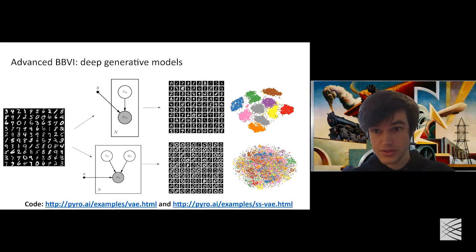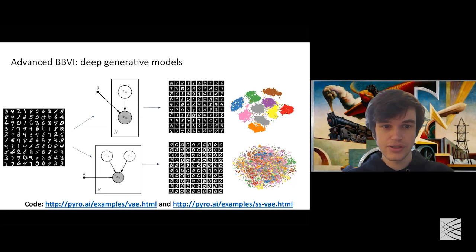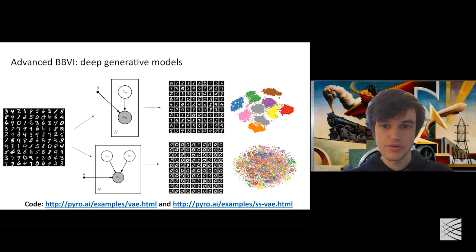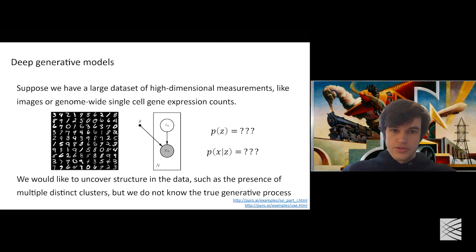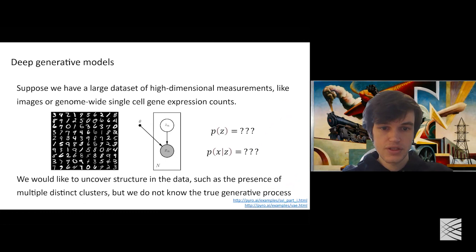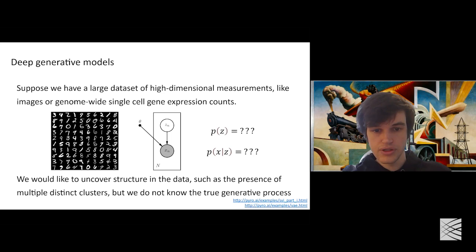Now that we've covered the basics of variational inference and black box variational inference, we can get to the fun part: applying this powerful tool to the problem of representation learning and learning generative models of high-dimensional data. Suppose we have a large dataset of high-dimensional measurements — images or genome-wide single-cell expression counts. Our running example will be black-and-white images of handwritten digits. We'd like to write down a probabilistic model that will uncover latent structure in the data, but we don't know the true generative model.